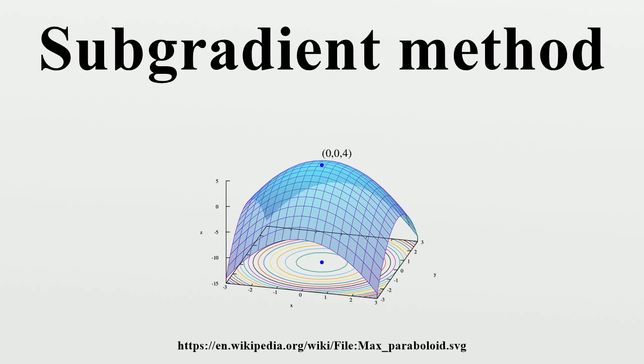Classical subgradient rules: Let f be a convex function with domain. A classical subgradient method iterates where g denotes a subgradient of f, and k is the iteration.